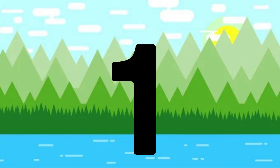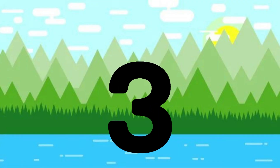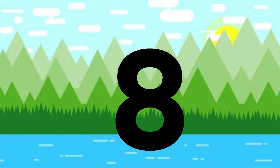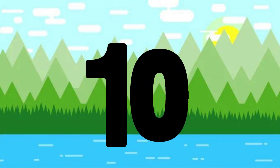One little, two little, three little numbers. Four little, five little, six little numbers. Seven little, eight little, nine little numbers. Ten little numbers.